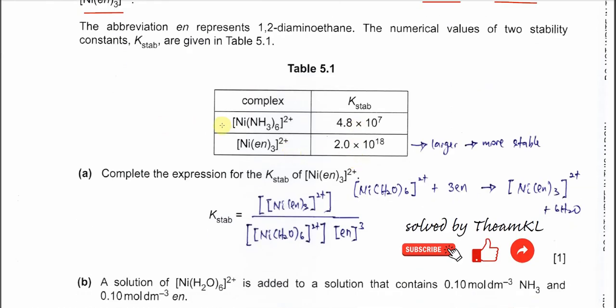The K_stab for these two complex ions is given. From here we know that the complex with the EN is more stable. We know it's more stable because the K_stab value is really large. If there is a complex ion formed, this one is always the one that forms first and forms more.